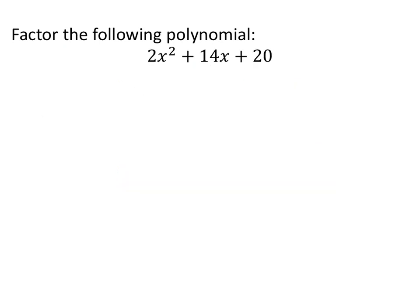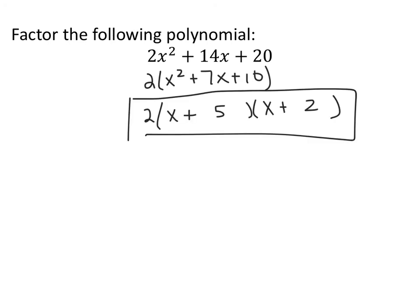Here's another polynomial: 2x² + 14x + 20. Go ahead and pause the video and factor it. Starting by factoring out 2, we're left with 2(x² + 7x + 10). The only factors of x² are x and x. For 10, the options are 10 and 1 or 5 and 2. Since they must add to 7, we pick 5 and 2, giving us 2(x + 5)(x + 2).